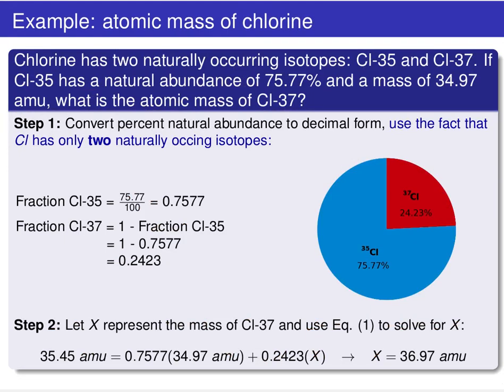For our final example, let's look at yet another variation on average atomic mass problems using chlorine again. Let's pretend all we know is that chlorine has two naturally occurring isotopes, 35 and 37, that chlorine-35 has a natural abundance of 75%, and that we know the mass of chlorine-35. We want to use only that information to determine the mass of the other isotope, chlorine-37.